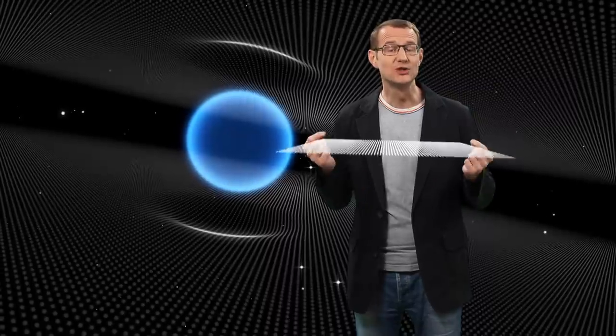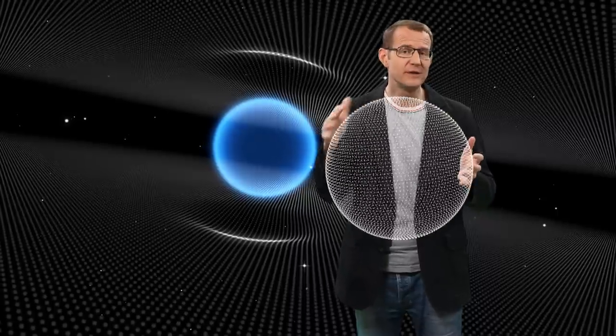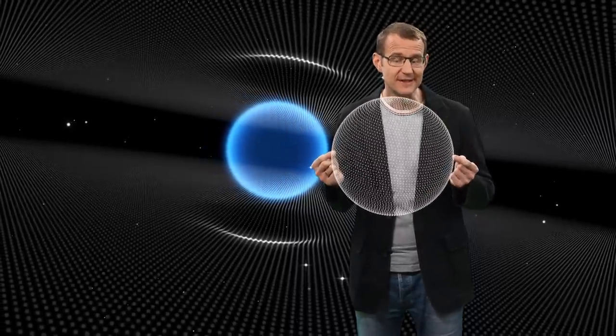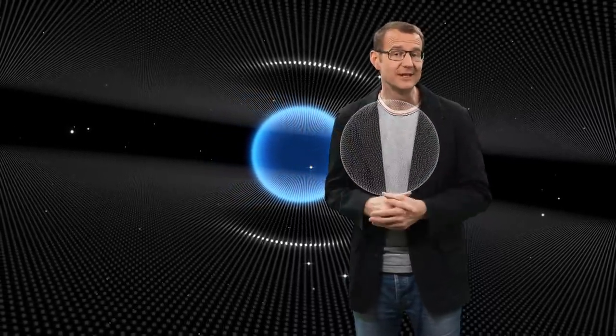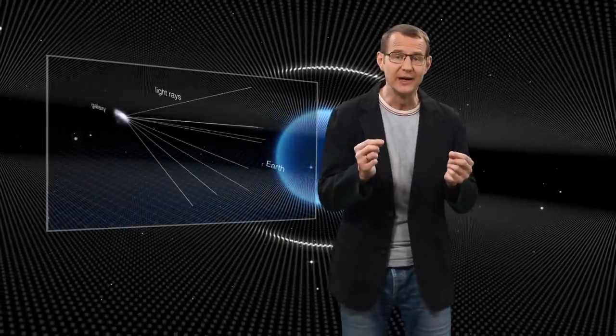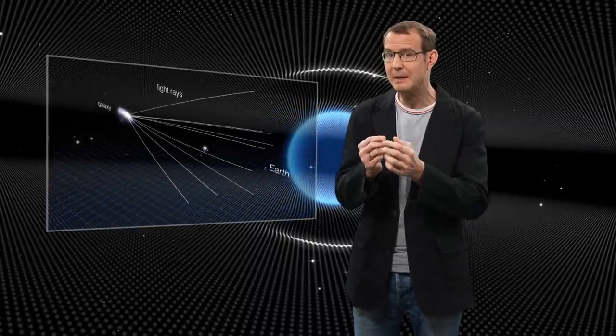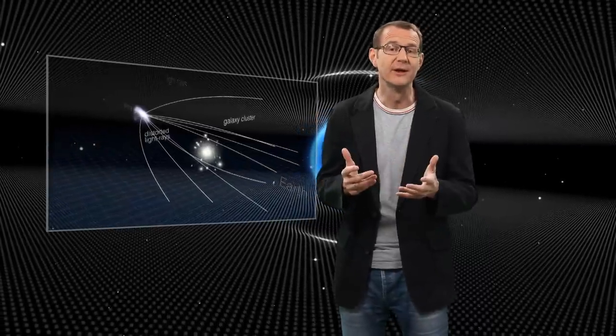In space, light travels invariably along straight lines. But what's a straight line? Well, it's the shortest distance between two points. But in a curved space, the shortest distance between two points may not necessarily look particularly straight to us. And what that means is that when a light ray passes very nearby a massive object that curves the space around it, the light ray is bent.